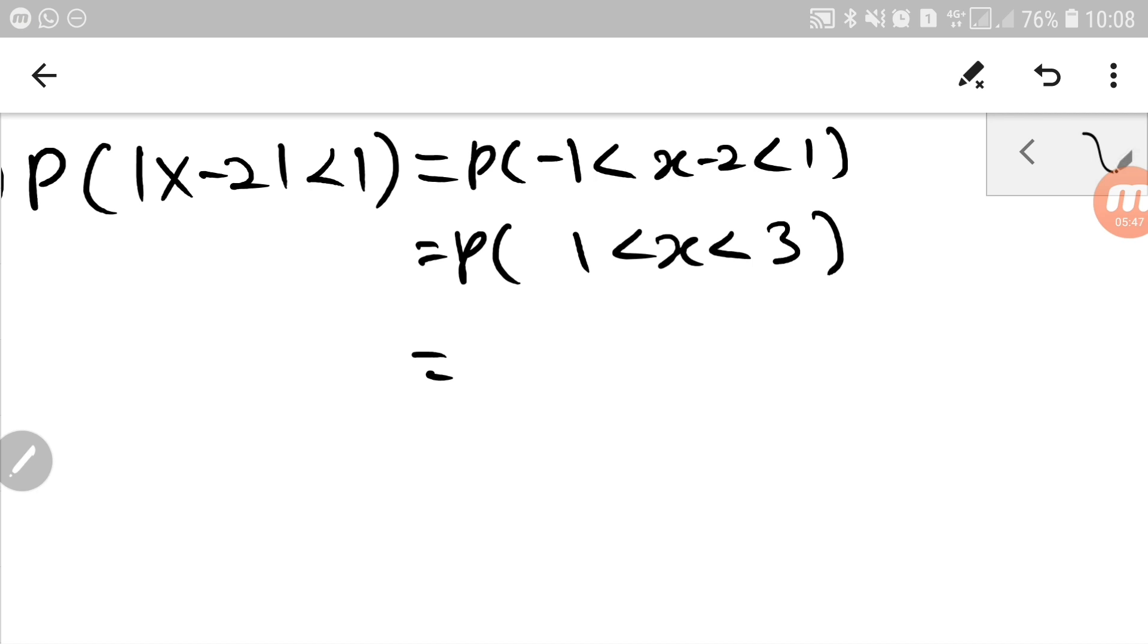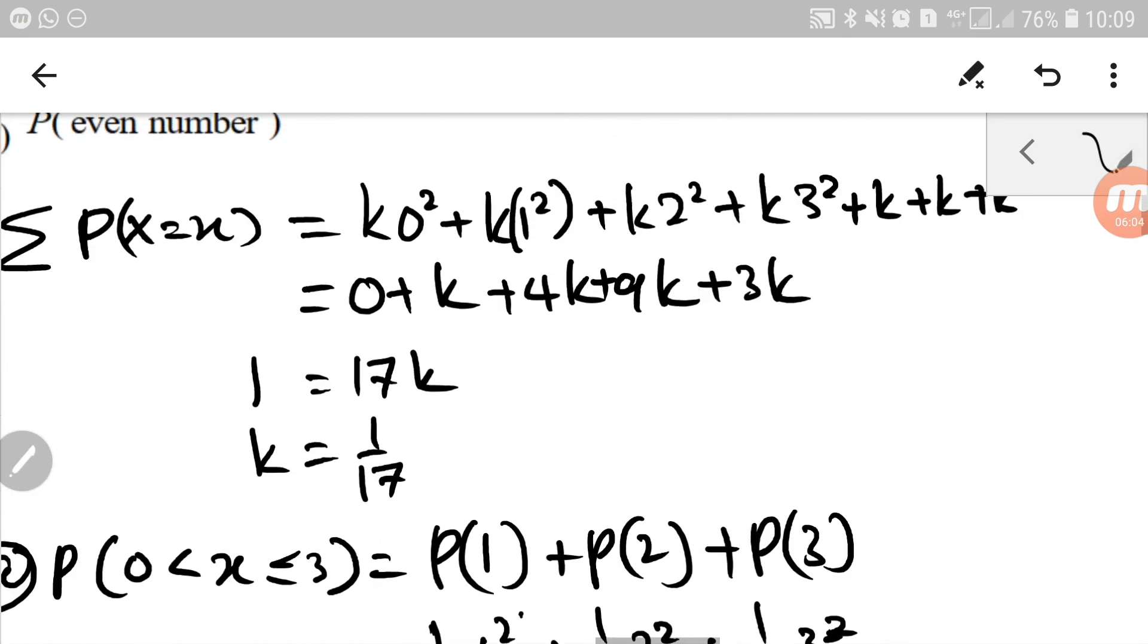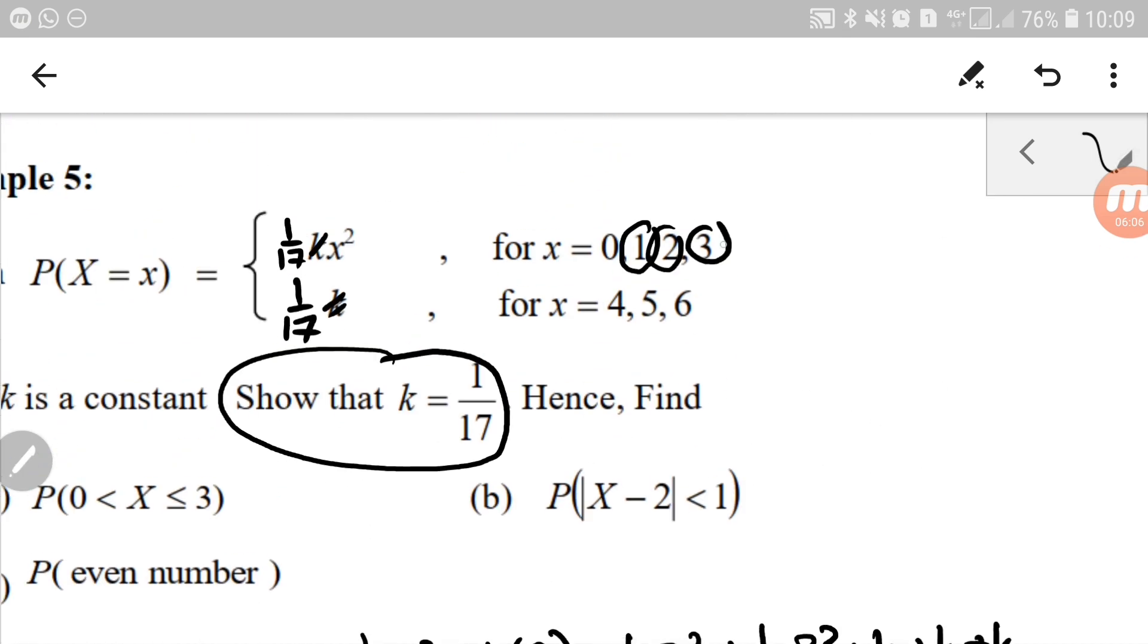So from this one, since it's simplified already, we know that what the question wants is the probability of x when it's between 1 and 3, not including 1 and 3. So the only possible value to satisfy this question is x equals 2.